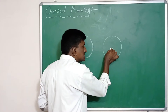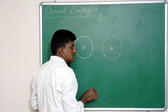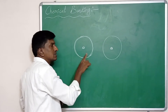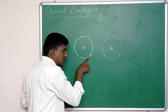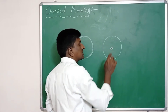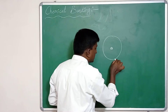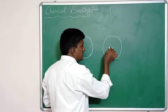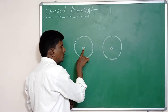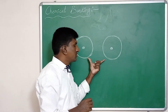The attraction force acts between the valence electrons of the first atom and the nucleus of the second atom. The nucleus carries a positive charge and the valence electrons have a negative charge. Similarly, the attraction force also acts between the valence electrons of the second atom and the nucleus of the first atom.